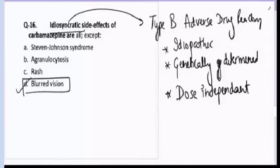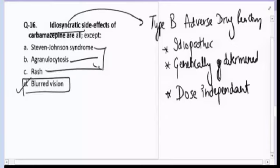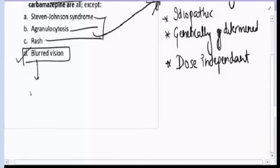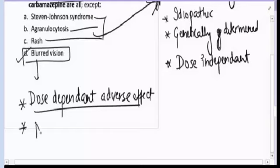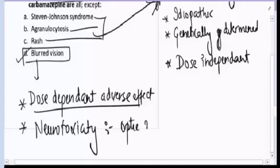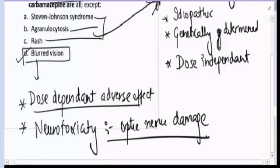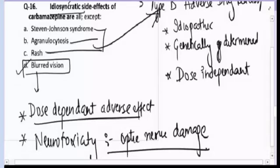Stevens-Johnson syndrome, agranulocytosis, and rashes are idiosyncratic reactions — they may occur suddenly, in any person, at any dose. Blurred vision, however, is a dose-dependent adverse effect of carbamazepine, occurring mainly due to neurotoxicity involving the optic nerve. So blurred vision is the dose-dependent adverse effect of carbamazepine.